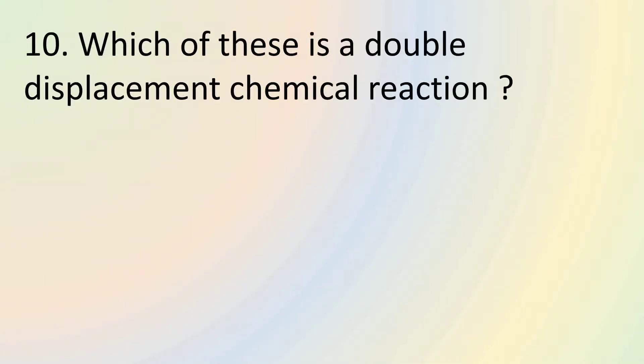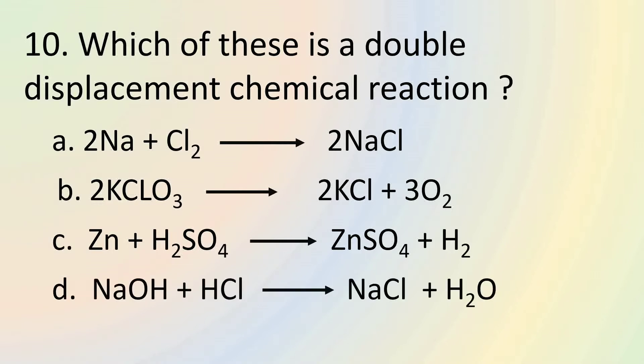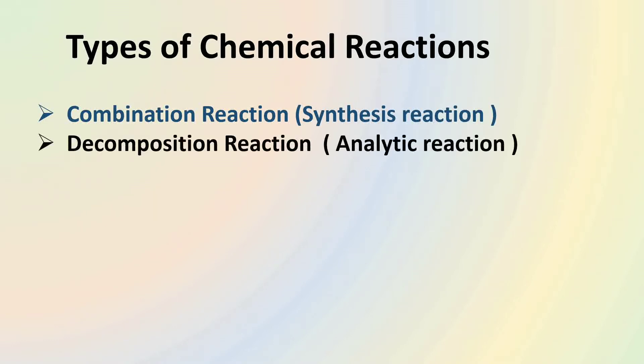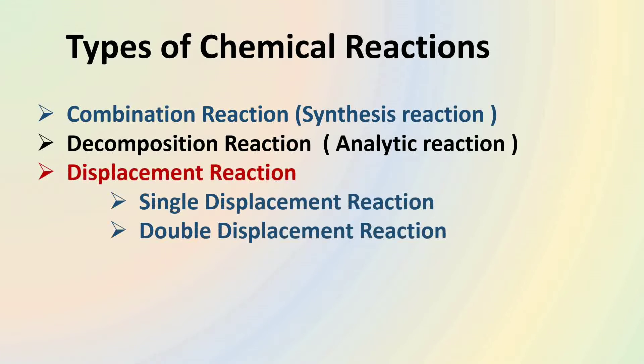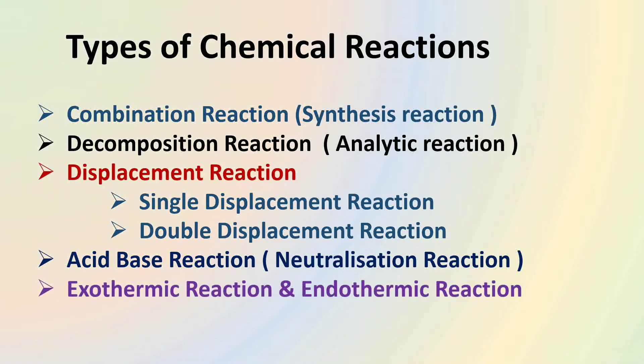Question number 10 asks us to identify a double displacement chemical reaction. We are given the following options. But before we choose one, let's understand the types of chemical reaction. Chemical reaction may be combination reaction also called synthesis reaction where a single compound is formed by the direct combination of two or more reactants. Decomposition reaction also called as analytic reaction where a single compound is decomposed into two or more simple molecules. Similarly, displacement reaction also called as substitution reaction where an atom or a group of atoms substitute another atom or a group of atoms in reactants. It may be single displacement reaction or double displacement reaction.